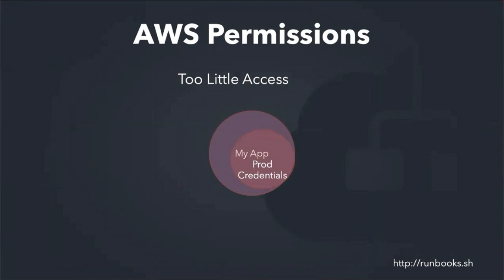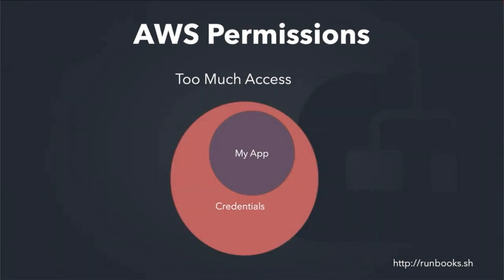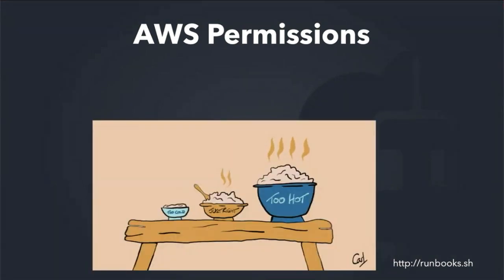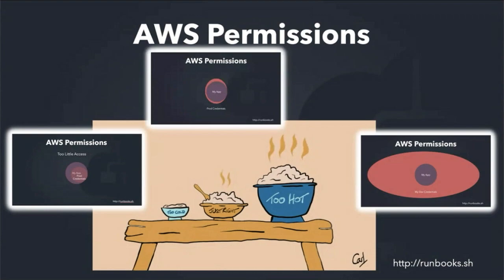If you have too few credentials, you get that Zoom error — 'this user is not authorized.' Too much access is not good either, because if the credentials get compromised someone has more control into your system. I always go back to the Goldilocks analogy: we don't want it too cold, we don't want it too hot — we really want our credentials to be just right. And you can automate this. By automating it, when you launch your application from AWS into production, your credentials follow the principle of least privilege — just right, not too little, not too big.